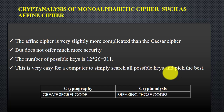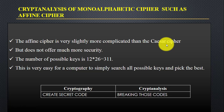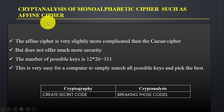In this video you will learn about the affine cipher. The affine cipher is slightly more complicated compared to the Caesar cipher, but it does not offer much more security — because in an affine cipher it is very easy for a computer to simply search for all possible keys and pick the best one.